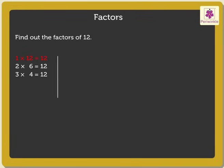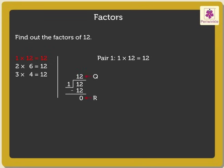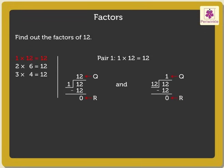Now, let us take each pair of numbers separately and understand what it means. Let us take the first pair. Here, when we divide 12 by 1, we get the quotient as 12. And when we divide 12 by 12, we get the quotient as 1. In both the cases, the remainder is 0. Thus, it means that 12 is divisible by 1 and 12.